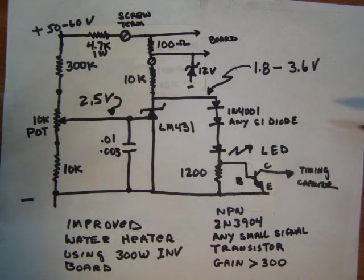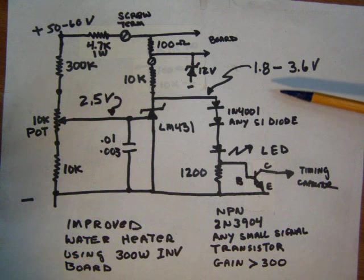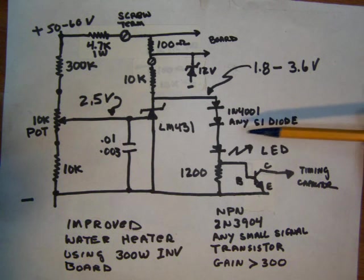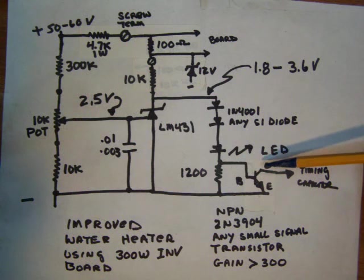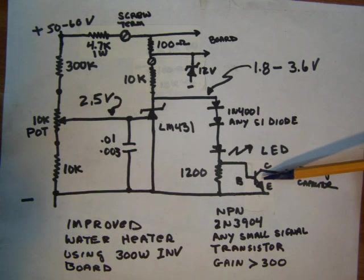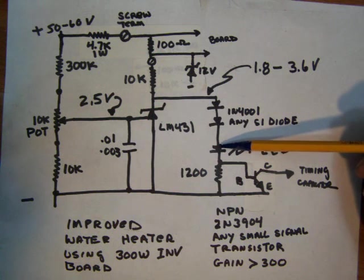Hello, this is the schematic for the simplified water heater controller that uses a 300 watt inverter board. I say simplified because normally right down here we would have used an opto isolator to replace this transistor.